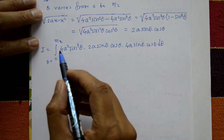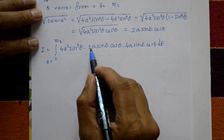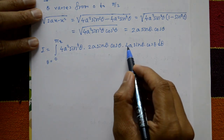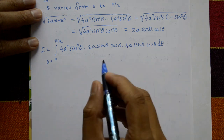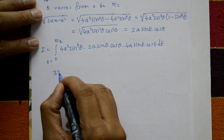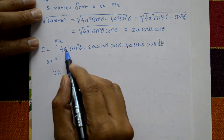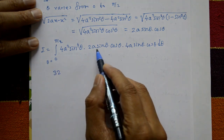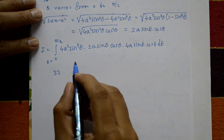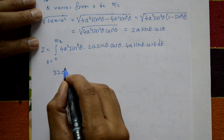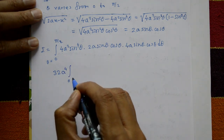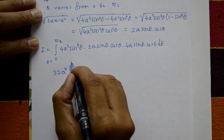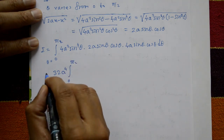Now 4A times 2A times 4A gives 32. So 32A⁴ outside — these are constant variables, take outside — integration of 0 to π/2.